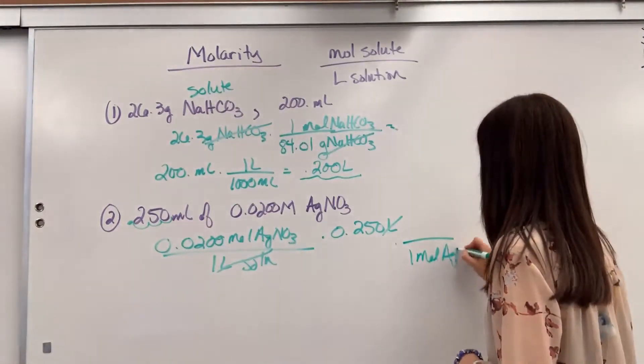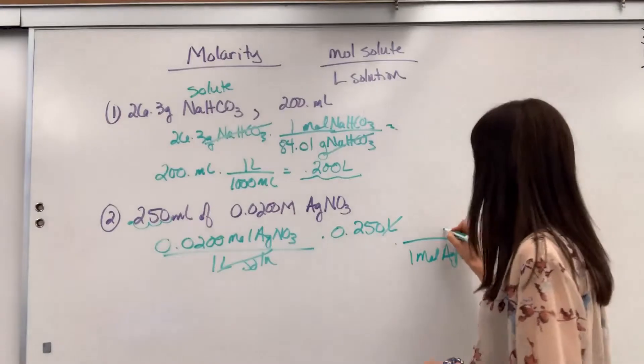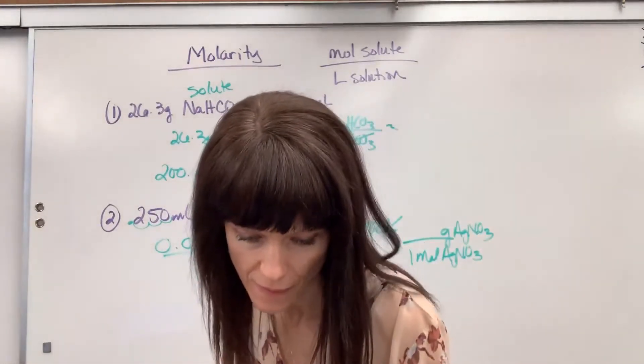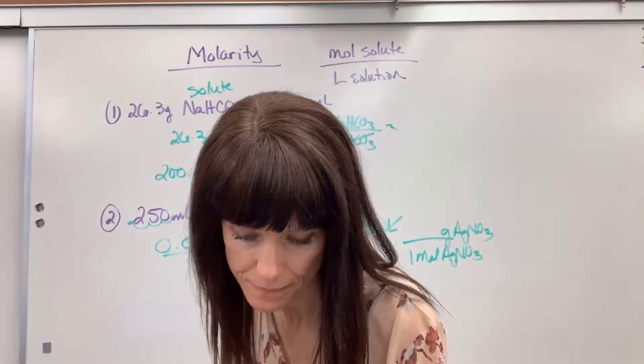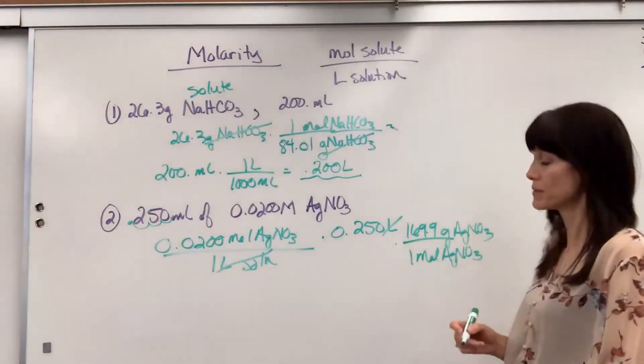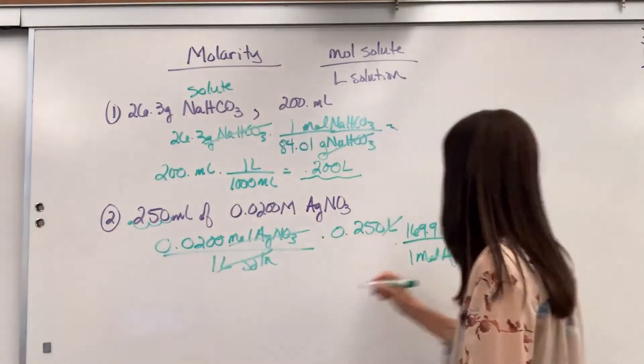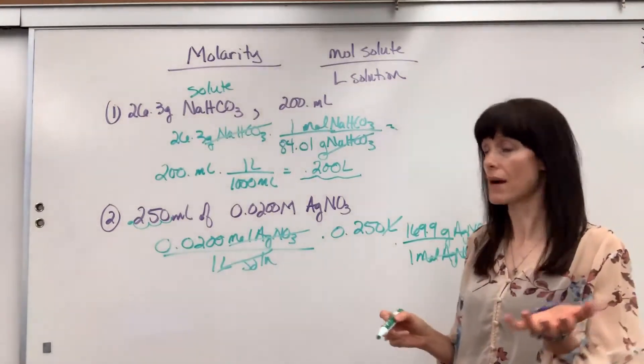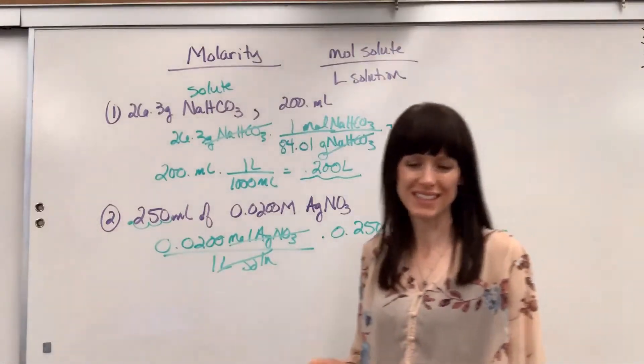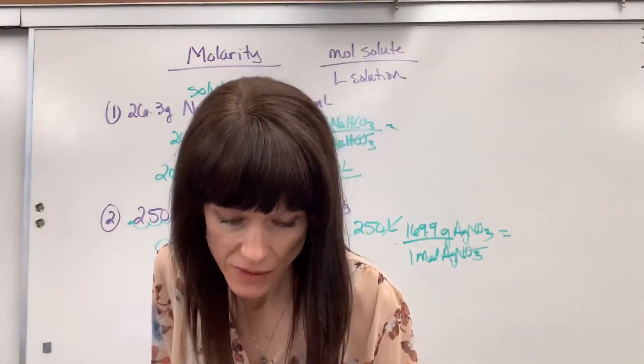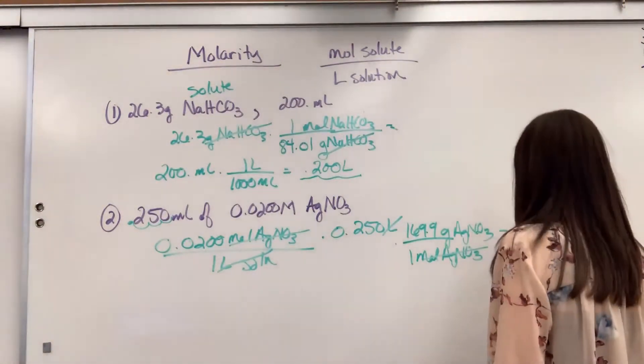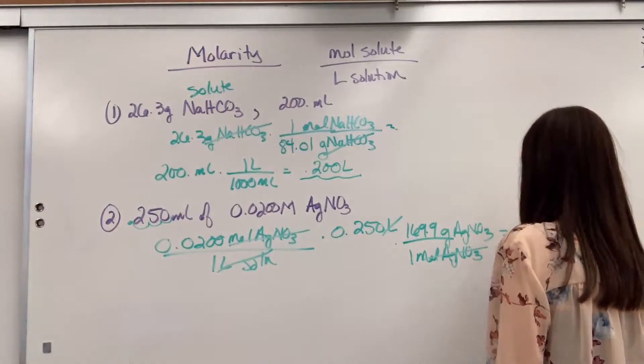Now we're going to go from moles to grams. One mole of silver nitrate is going to be, let's look how many grams. That is 169.9 grams. Check it out. Moles of silver nitrate cancels. So to do the math, 0.02 times 0.25 times 169.9 and that tells us that we will need 0.850 grams of silver nitrate.